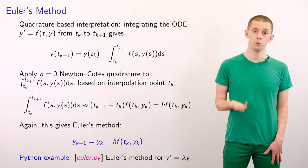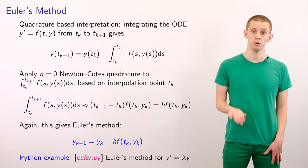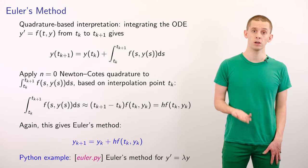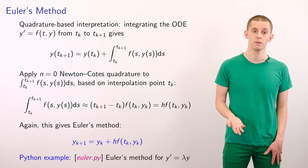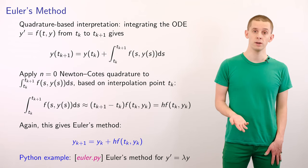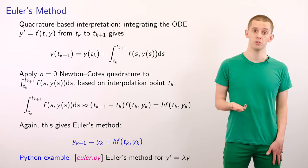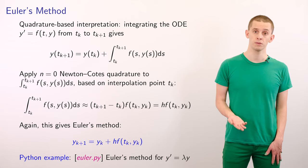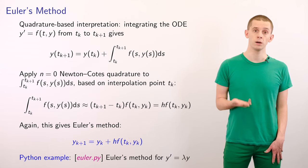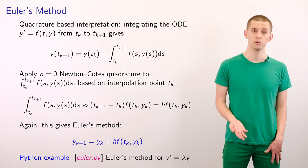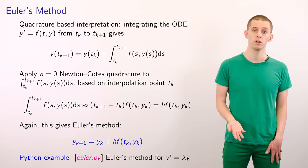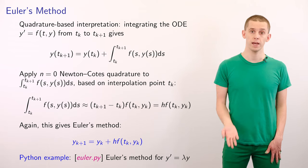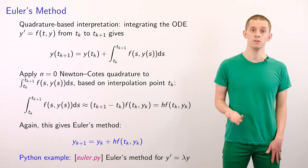There's an alternative way that we can arrive at Euler's method, and this uses a quadrature-based interpretation. Suppose now that we integrate our ODE, y prime is equal to f of t and y, over the interval from tk to tk plus 1. Using the fundamental theorem of calculus, this will give us that y at tk plus 1 is equal to y at tk plus the integral from tk to tk plus 1 of f of s comma y of s ds.